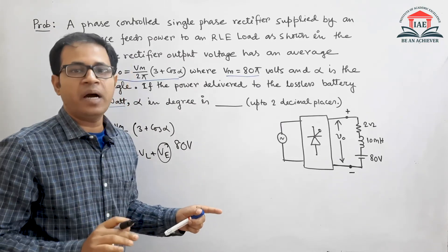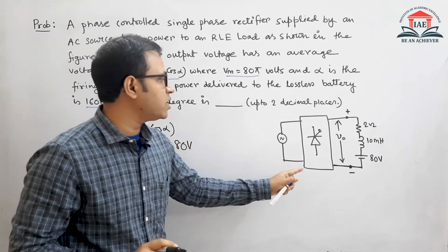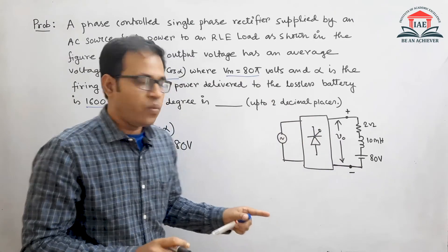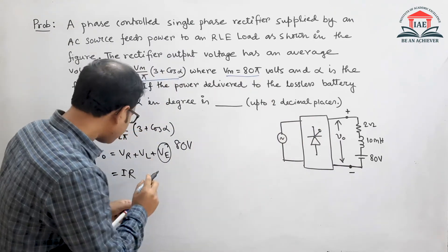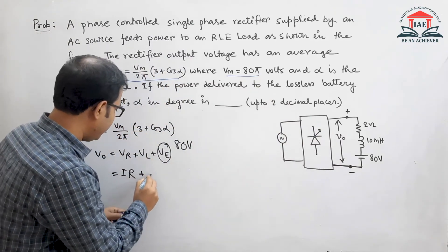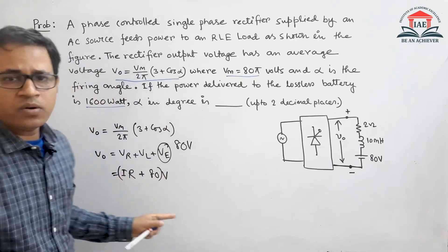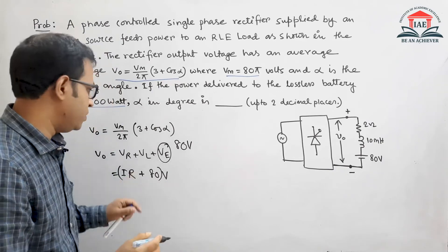One thing you must keep in mind is that the average voltage across the inductor is always zero. So we can say the output voltage must equal IR plus 80 volts. Now let us find out what will be Vr, that is I into R.